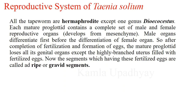Tapeworms are hermaphrodite except one genus, Dioecestus. Each mature proglottid contains a complete set of male and female reproductive organs, which develop from mesenchyme. Male organs differentiate first before female organs. After completion of fertilization and formation of eggs, the mature proglottid loses all its genital organs except a highly branched uterus filled with fertilized eggs. The segments containing these fertilized eggs are called ripe or gravid proglottids.